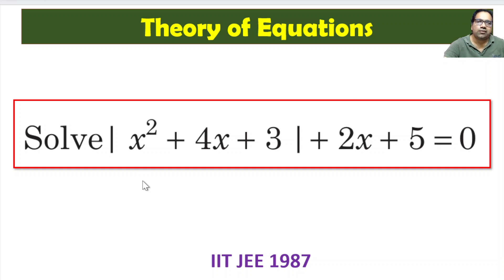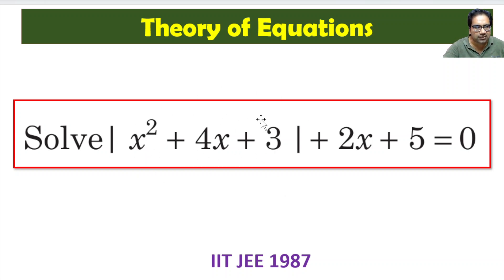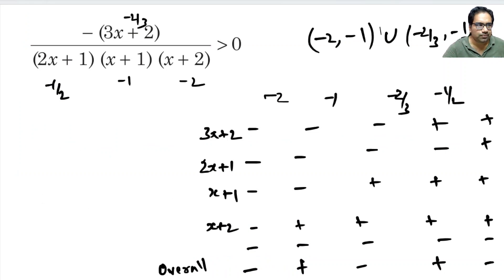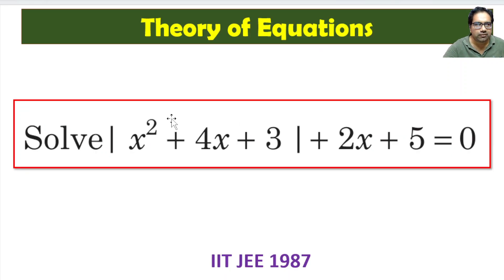Whatever is there within the absolute function — when this thing is greater than 0, the absolute function of this is just this. When whatever is within the absolute function is less than 0, the absolute value of this is minus of this. For example, absolute value of 2 is 2, and absolute value of minus 2 is minus of minus 2, which is again plus 2. So, absolute value of x when x is less than 0 is minus x.